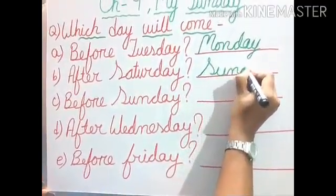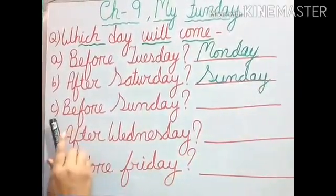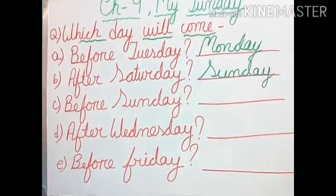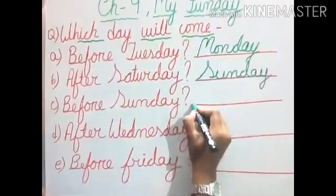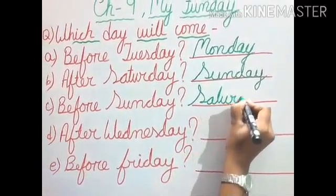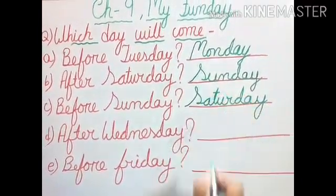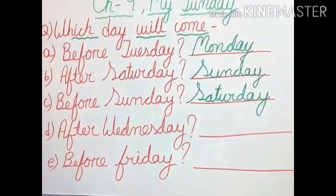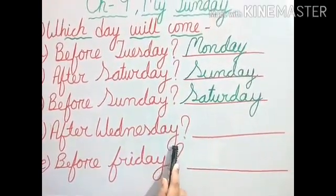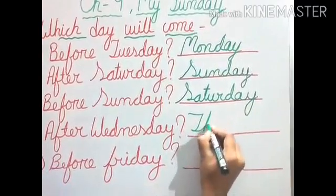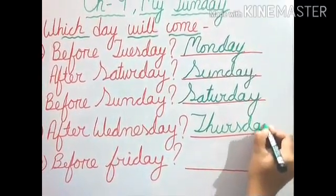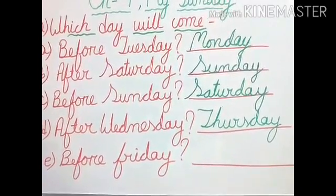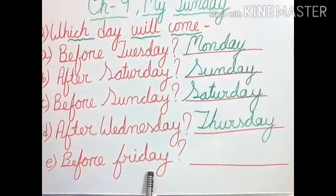Now let us see: which day will come before Sunday? Before Sunday, we are getting Saturday. Next, number D: which day comes after Wednesday? After Wednesday, we are getting Thursday. And the last one, number E: which day comes before Friday? Think and tell. Before Friday, we are again getting Thursday.